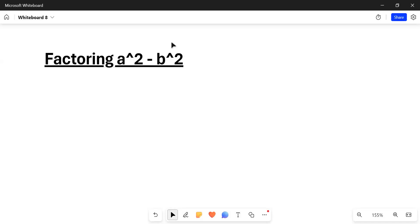In this video, we're going to look at factoring a squared minus b squared. This is a very special factoring pattern, and it has a very special name. This is called the difference, meaning subtraction, of two squares.